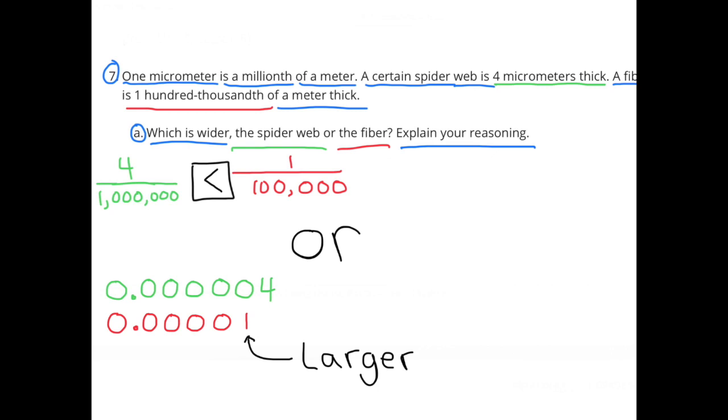Number 7. One micrometer is a millionth of a meter. A certain spiderweb is 4 micrometers thick. A fiber is one hundred thousandths of a meter thick. Part A: Which is wider, the spiderweb or the fiber? Explain your reasoning.